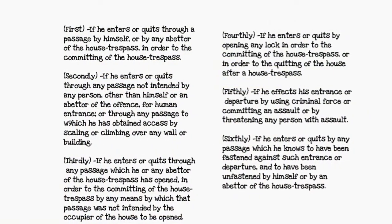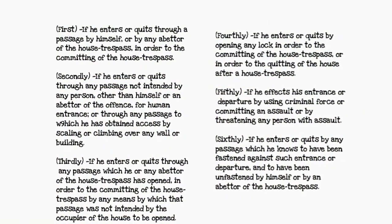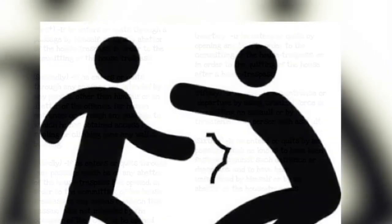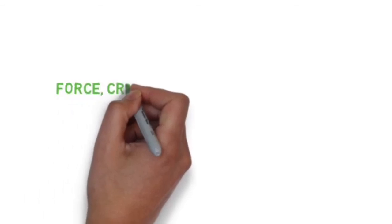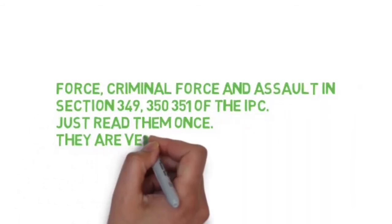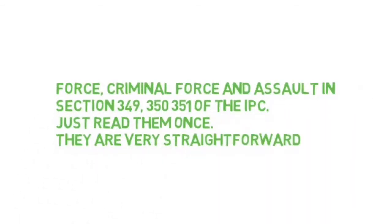Fifth, if he effects his entrance or departure by using criminal force, or committing an assault, or by threatening any person with assault — so if he enters or leaves by using criminal force, assault, or threat to assault. The definitions of force and assault can be found in sections 349, 350, and 351 of the IPC.